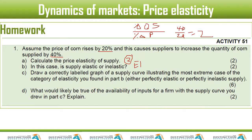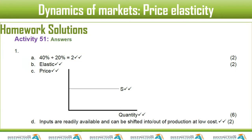Draw a correctly labeled graph. That means we want to see our price axis, our quantity axis, and the supply curve sloping correctly — whether it slopes downwards or upwards. We want an extreme case, so the answer is perfectly elastic or perfectly inelastic. Since in part B you got elastic, that will be perfectly elastic. So the supply curve you have to draw here is horizontal. A firm with a horizontal supply curve would mean that inputs are readily available and can be shifted into or out of production at a low cost.